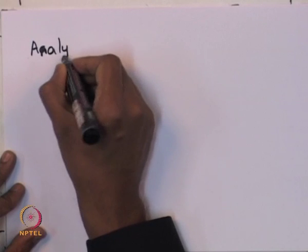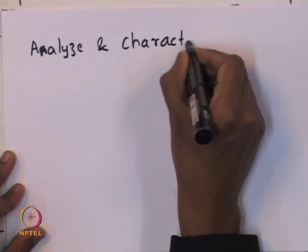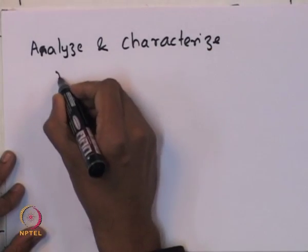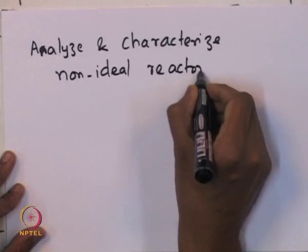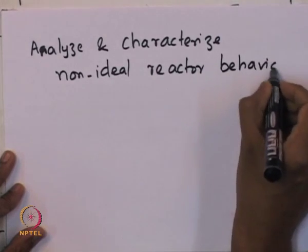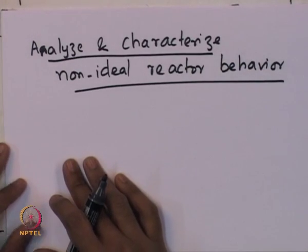Having diagnosed the deviation, how do I characterize a reactor that does not behave like an ideal plug flow or mixed flow reactor? The objective for the rest of the course is to analyze and characterize non-ideal reactor behavior. The key piece of information used for this is the distribution of residence time.